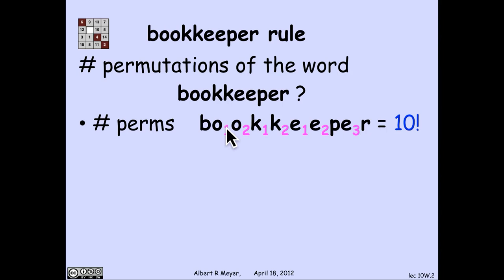The simple way to do it is to label all of the indistinguishable letters with subscripts to make them distinguishable. So I'm going to put subscripts 1 and 2 on the o's, 1 and 2 on the k's, and 1, 2, and 3 on the e's. Now all 10 letters are distinguishable. If I ask how many ways are there to permute these 10 letters, the answer by the generalized product rule is simply 10 factorial.